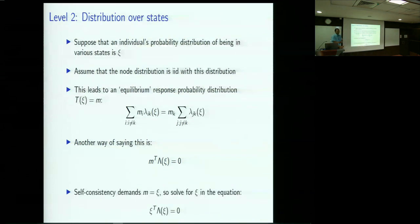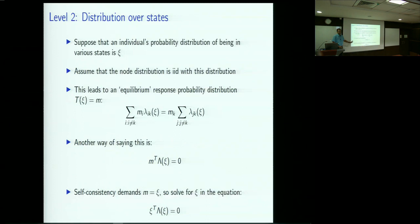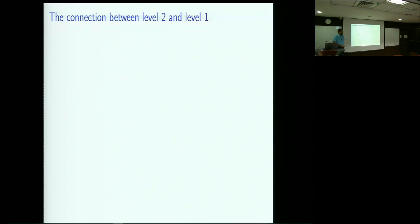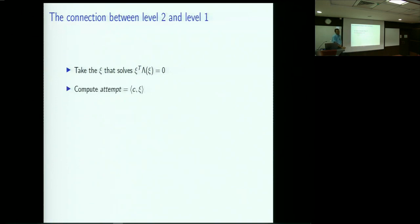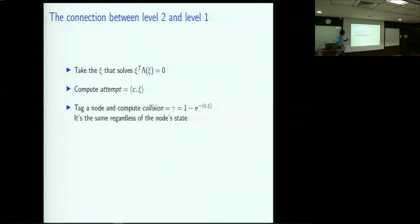Self-consistency demands that your response matches what you actually assumed and attributed to every other node as the field. So xi^T times Lambda(xi) must be equal to zero. That's the level 2 fixed point equation. To connect level 1 and level 2: take the xi that solves xi^T Lambda(xi) = 0. Then compute the attempt for this — that's the activity coefficient C·xi. Tag a node and compute collision probability for that: 1 minus e to the minus attempt. We also saw that in the limit as n goes to infinity, this collision probability is the same regardless of the node's state.